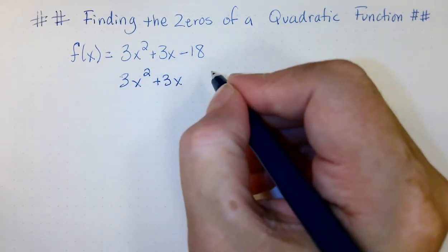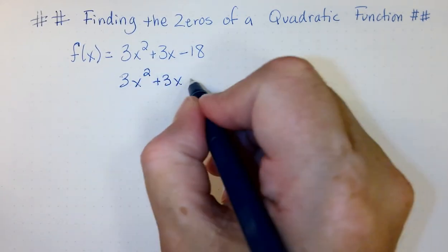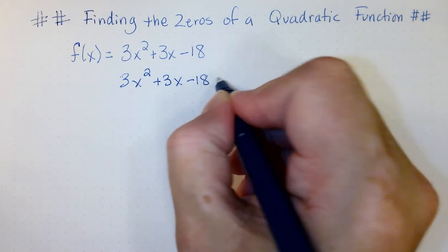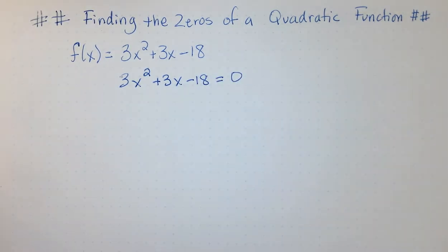So, we have 3x squared plus 3x minus 18 equals zero. Now, we have a quadratic equation that we can solve.